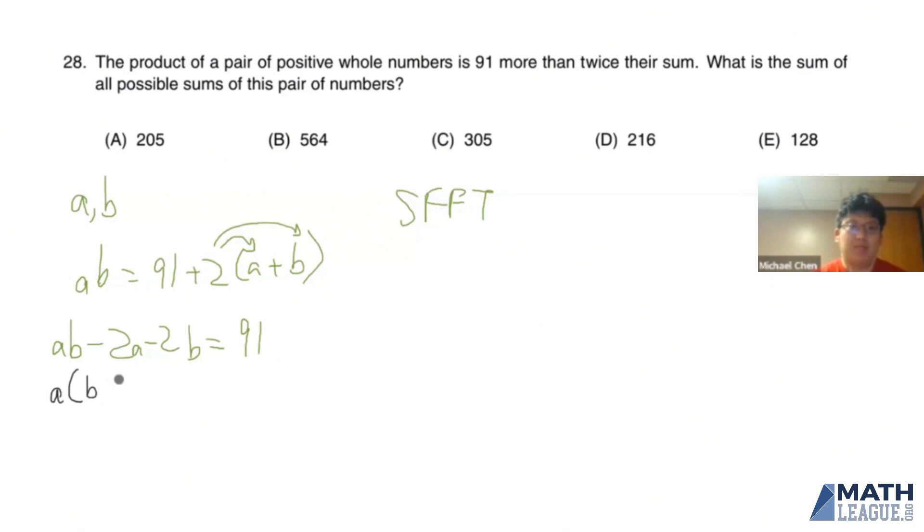So we'll factor out A times B minus 2. We have minus 2 times B equals 91. Now what we're going to do is turn this also into a B minus 2, so that we can then factor by grouping. But if we do that, then we have added negative 2 times negative 2 or a positive 4 to the left-hand side of the equation. And to maintain equality, we have to do that to the right-hand side as well.